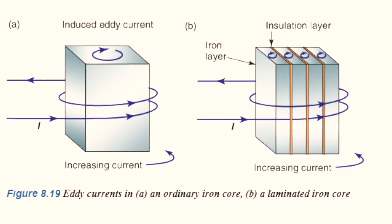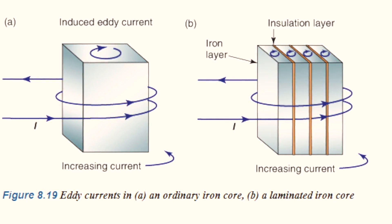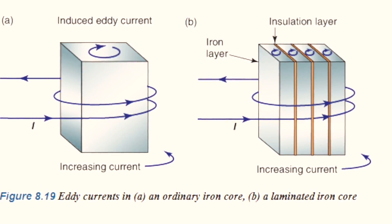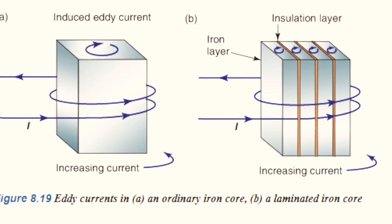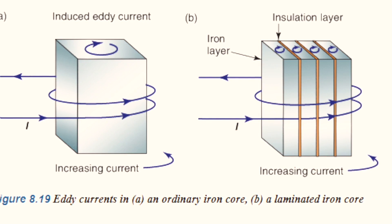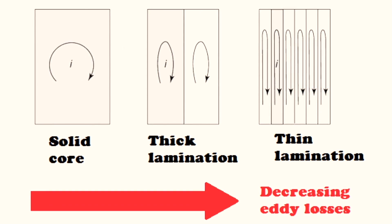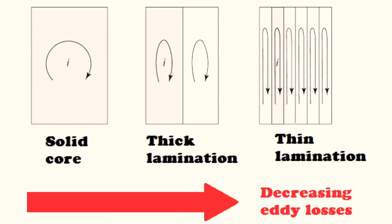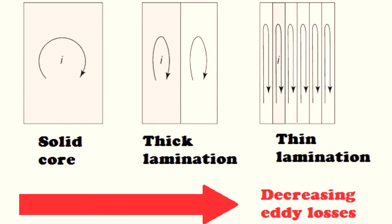To get rid of this eddy current, they divide and isolate the solid core into layers, or laminations, parallel to the magnetic field. This eliminates the risk of a larger circulating current in the metal and the subsequent opposing magnetic field.